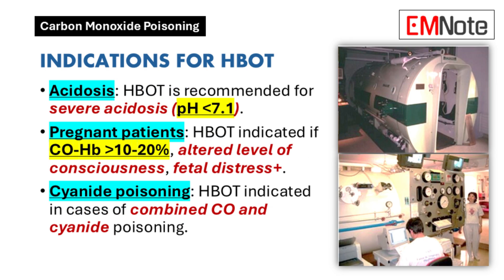Acidosis: Patients presenting with severe acidosis, particularly those with a blood pH lower than 7.1, should be considered for HBO therapy. This condition indicates a critical need for enhanced oxygenation and may signal a higher risk of complications.